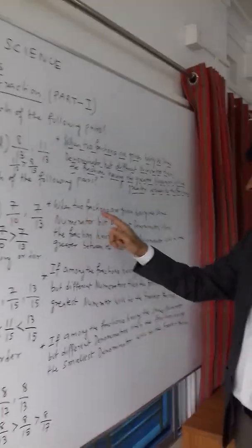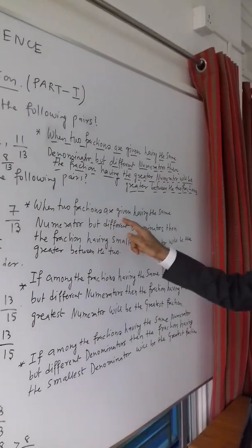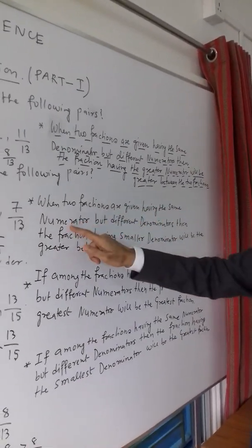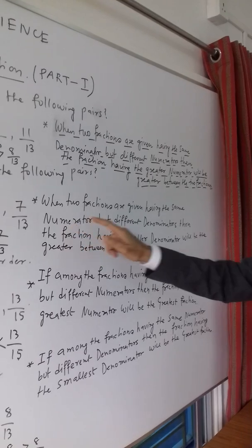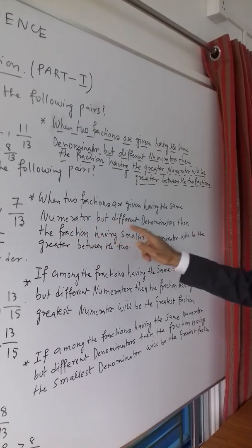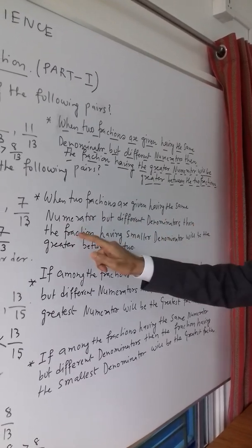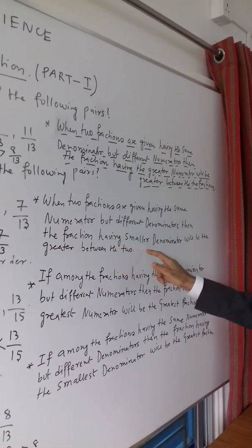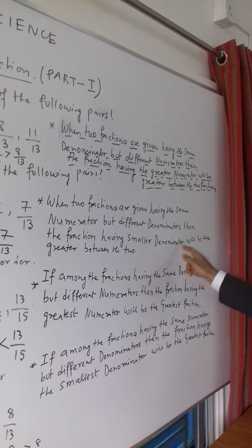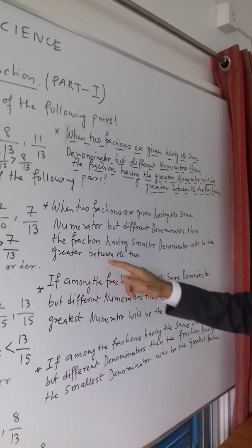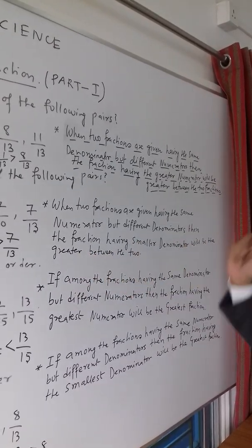When two fractions are given having the same numerator but different denominators, then the fraction having the smaller denominator will be the greater between the two.